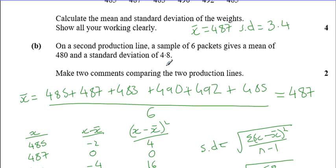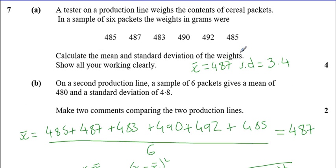Two comments comparing the two production lines: the first production line has a higher mean, therefore on average it produces heavier packets — that's your first mark. The second production line has a higher standard deviation, and standard deviation measures spread, so it has a higher standard deviation, therefore the results are more varied — and that's your second mark.